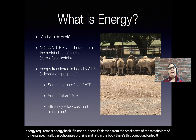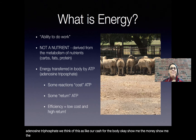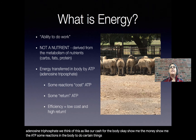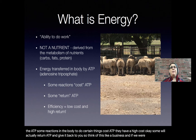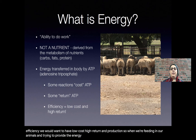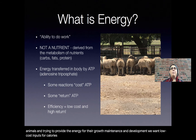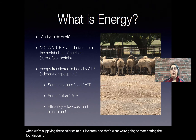In the body there's a compound called ATP — adenosine triphosphate — which we think of as our cash. Some reactions in the body cost ATP, while others return ATP and give it back to you. Think of this like a business: for efficiency, you want low-cost, high-return production. When feeding animals and providing energy for growth, maintenance, and development, we want low-cost inputs for calories but maximum returns — getting the best value when supplying calories to our livestock.